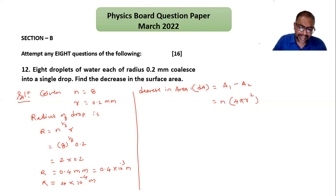How many droplets are there? n or 8. So I can write n times this, or directly 8, minus area of drop which is 4π times drop radius capital R². We can take 4π common, so n times small r² minus capital R². This is the formula.